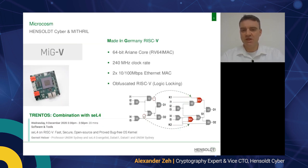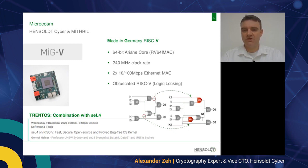Hansel Saiba is located in Munich and our first product is the so-called MiG-5, the abbreviation for Made in Germany RISC-V. We brought up the chip at the beginning of 2020. The main core is the 64-bit Ariane core which runs at a clock frequency of 240 MHz. As you can see in the picture, it has two Ethernet ports and can be used for gateway applications running at a line rate of 100 Mbps.